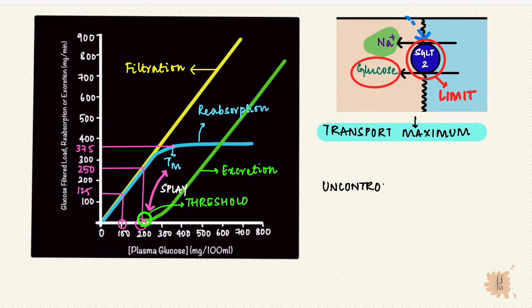So in patients with uncontrolled diabetes mellitus, the plasma glucose can go high enough to cross this threshold, saturate the carriers, and appear in the urine as glucosuria.